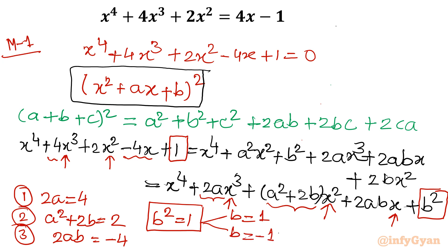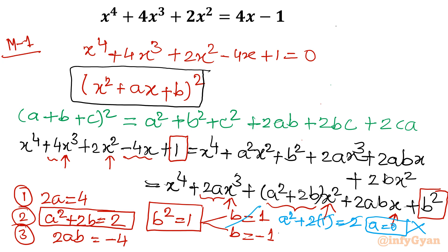If b is plus 1, using equation 2: a² plus 2(1) equals 2, so a equals 0, which is not accepted — so we reject b equals 1. If b equals minus 1, substituting into equation 2 gives a² equals 4, so a equals plus or minus 2.